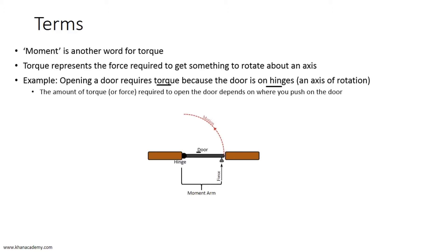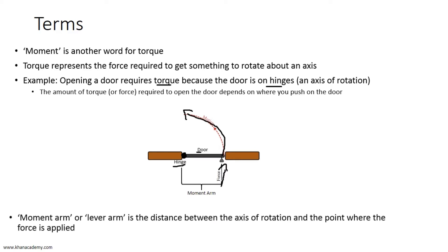Here's an example: we have our door and hinge. When we push on the door, it causes rotation about the hinge and the door opens. The moment arm — often referred to as the lever arm — is the distance between the hinge and where we apply the force. More generally, the moment arm is the distance between the axis of rotation and the point where the force is applied.